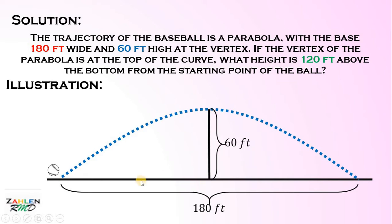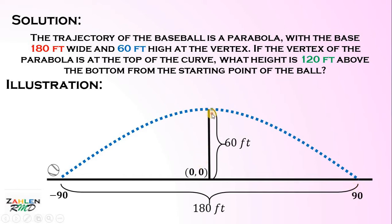Suppose this horizontal line is our x-axis, and this vertical line is the y-axis. Their intersection is the origin. On the x-axis, we have the point negative 90 and the other point is 90, because we have 180 in total — 90 from each side to the origin. On the y-axis, this point is 60.